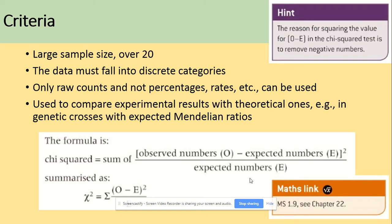So what are the criteria for the chi-squared test? We need a large sample, so we're talking about sample size over 20. The data must fall into categories because we will be looking at the different categories.